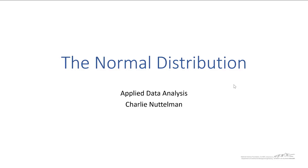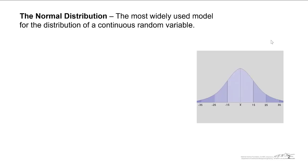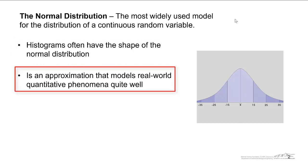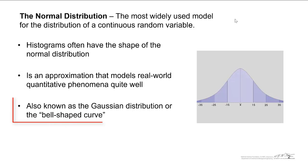In this screencast, you're going to learn all about the normal distribution, also known as the Gaussian distribution. The normal distribution is the most widely used model for the distribution of a continuous random variable. It often fits real world data well, but keep in mind there is real world data that doesn't necessarily fit the normal distribution — there are many different types of distributions. Histograms often have the shape of the normal distribution, and it is an approximation that models real world quantitative phenomena quite well. It is also known as the bell-shaped curve.